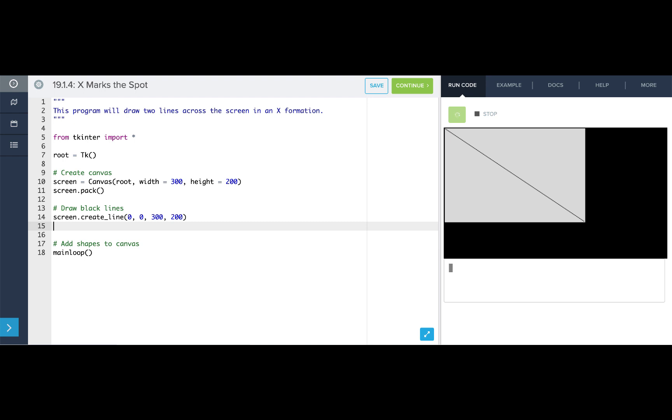If we want to draw an X on our canvas, we can draw a second line by using screen.create_line and having our first point be down in the bottom left hand corner which would have an x value of 0 and a y value of the canvas which is 200, and we want our line to end in the top right hand corner which would have an x value of the entire width of the canvas which is 300 and a y value of 0.